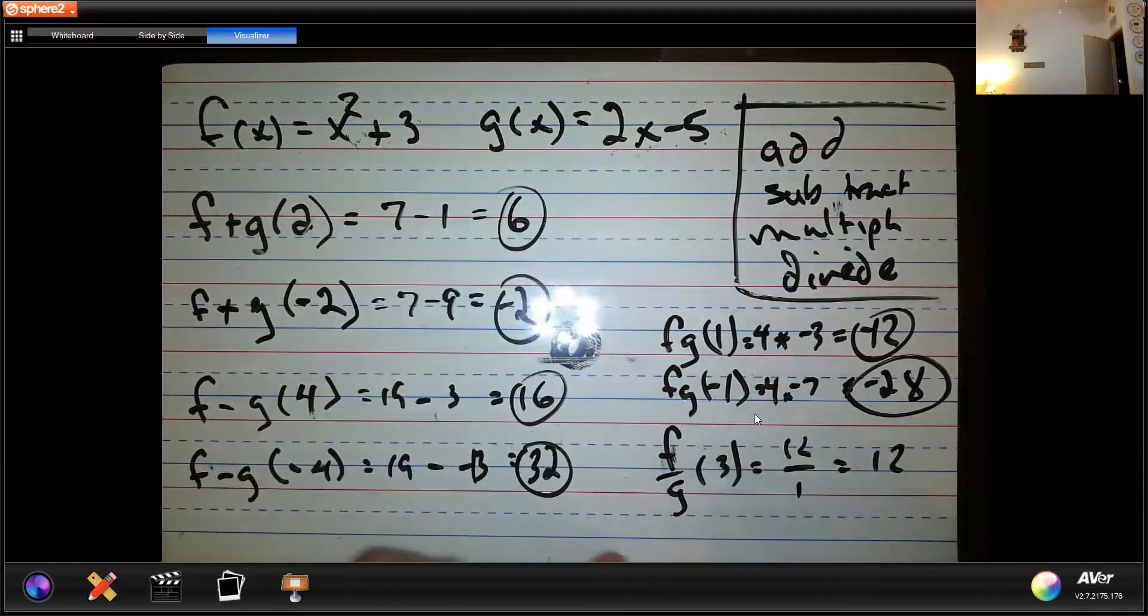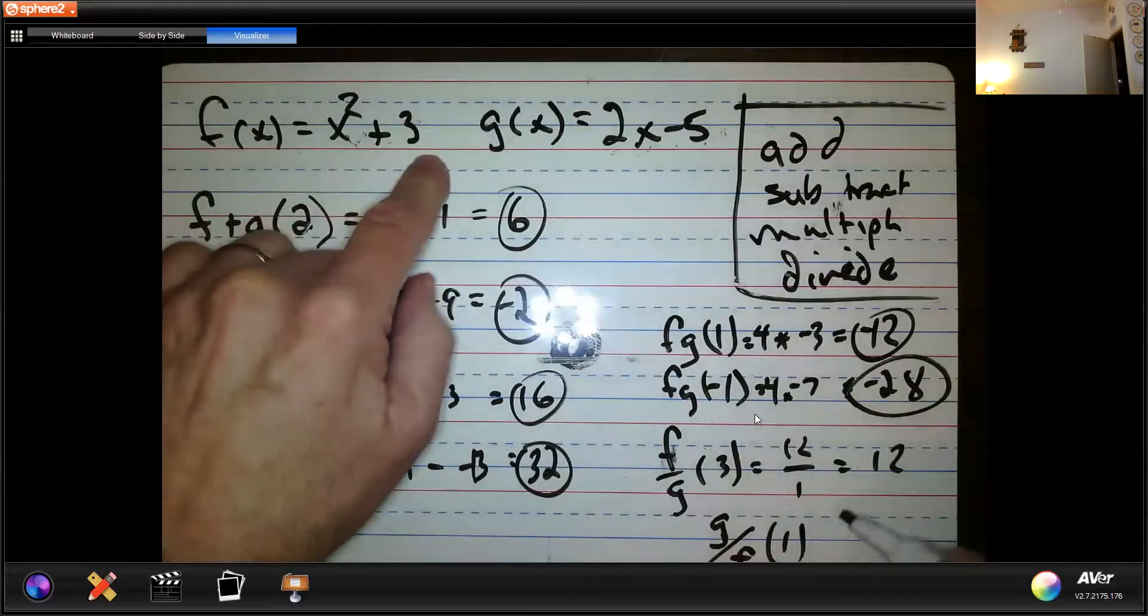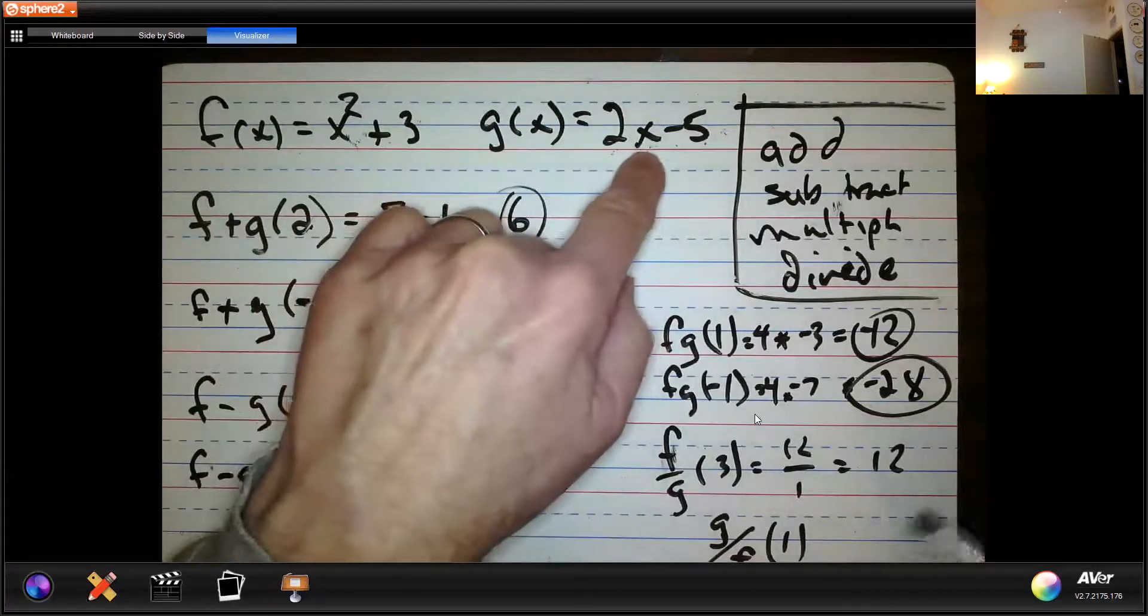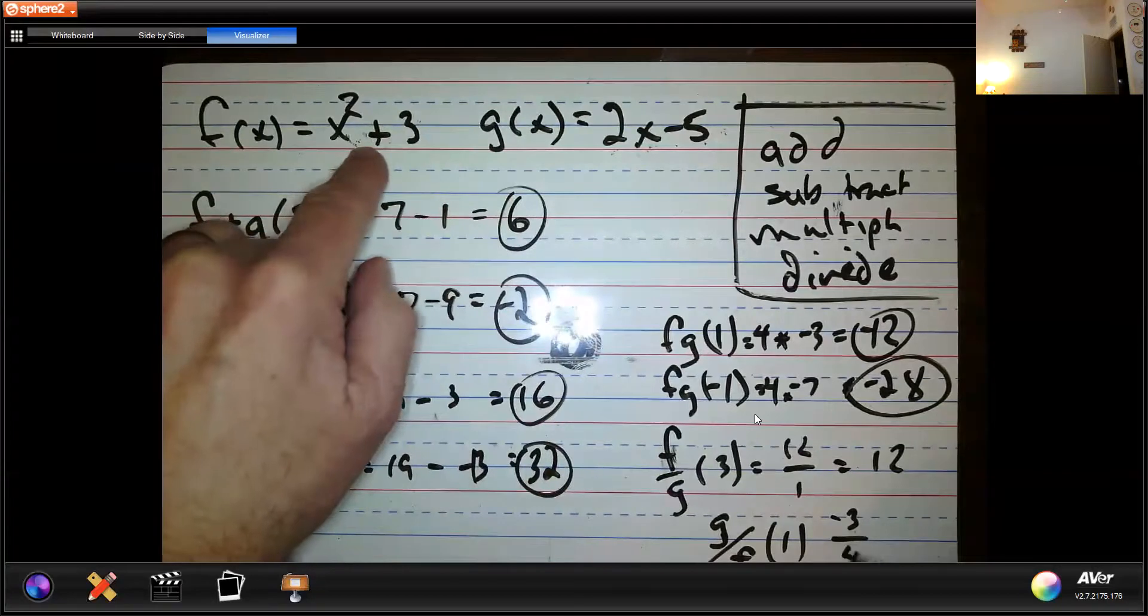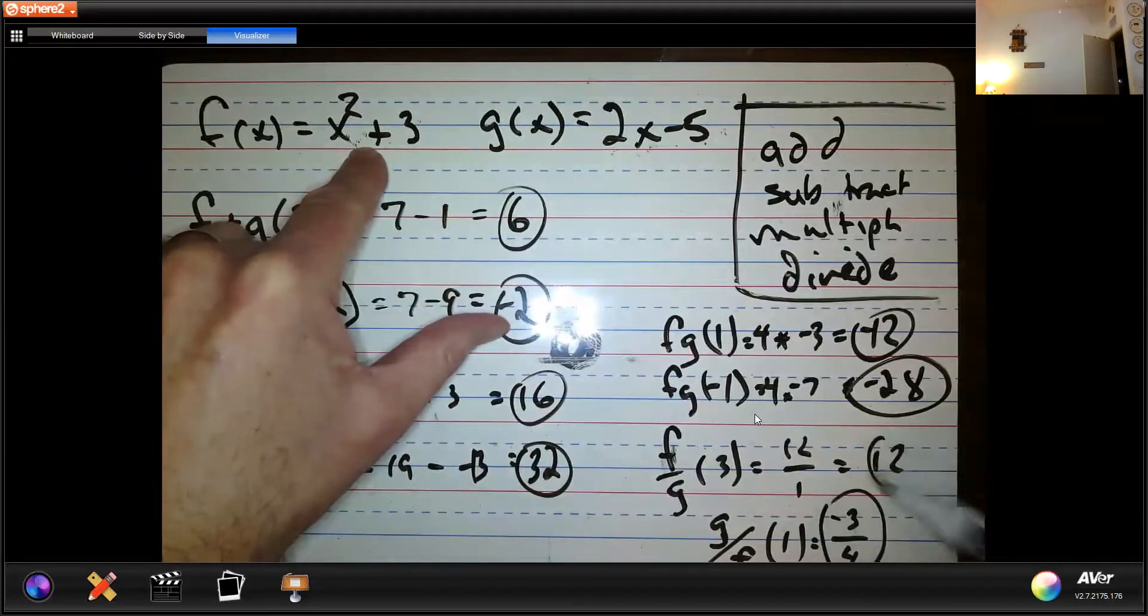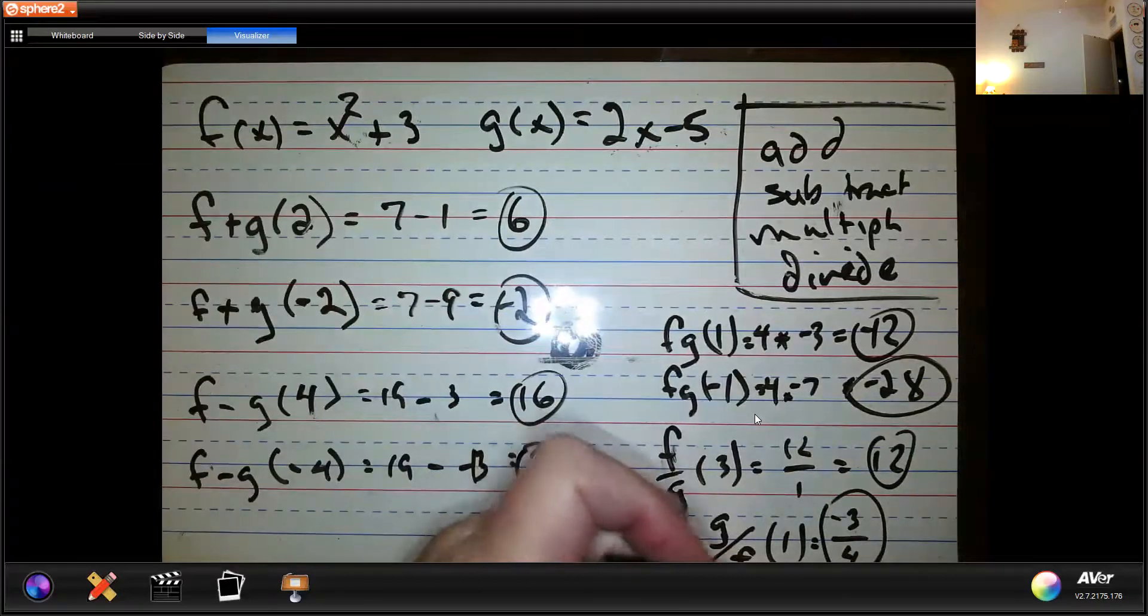And we don't have to divide f divided by g. I could do g divided by f. I mean, it works both ways, right? So what if I did that, and I picked, I don't know, 1. Let's pick a number 1. So this would be 4. No, no, g is first. So 1, this would be negative 3, and this would be 4, negative 3 fourths! Ta-da! See, that's all there is to it.